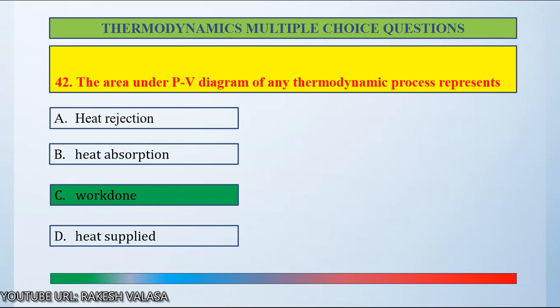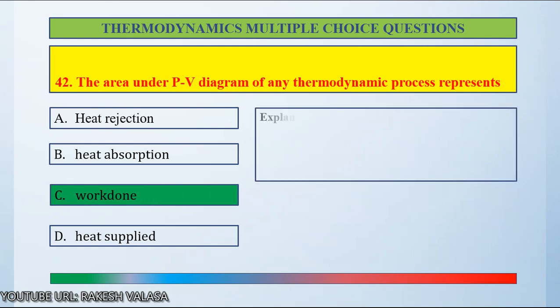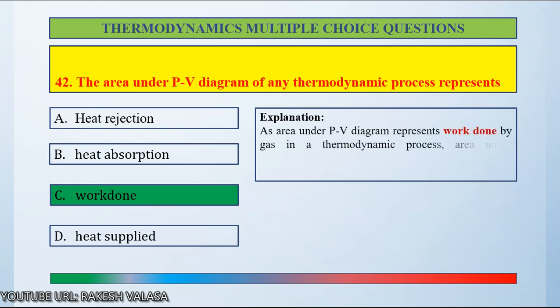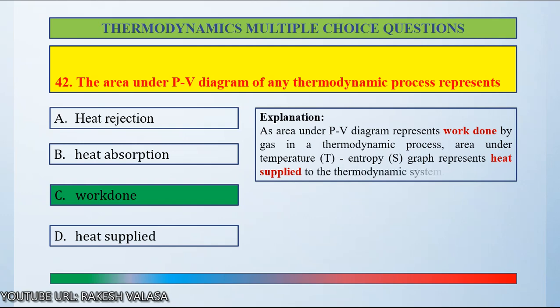Let us see the explanation. The area under the PV diagram represents work done by gas in a thermodynamic process. The area under the temperature-entropy graph represents heat supplied to the thermodynamic process.